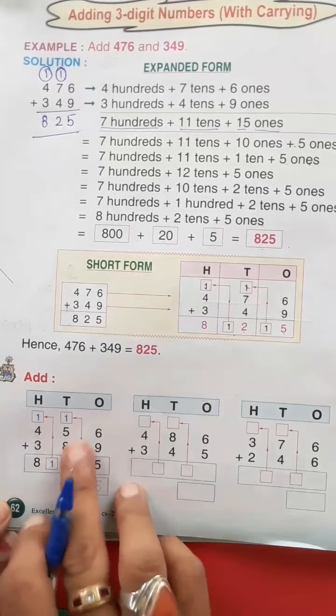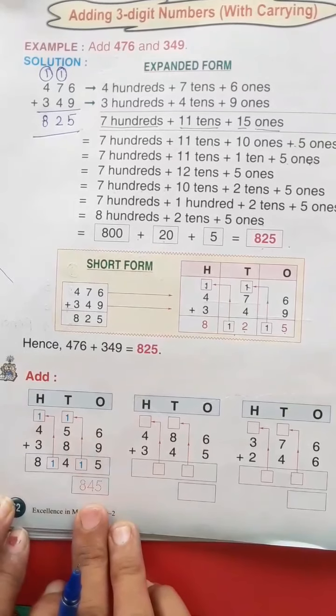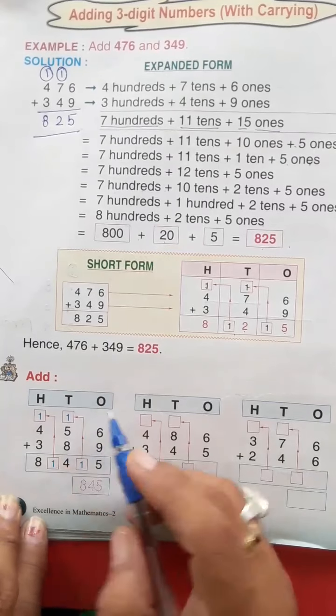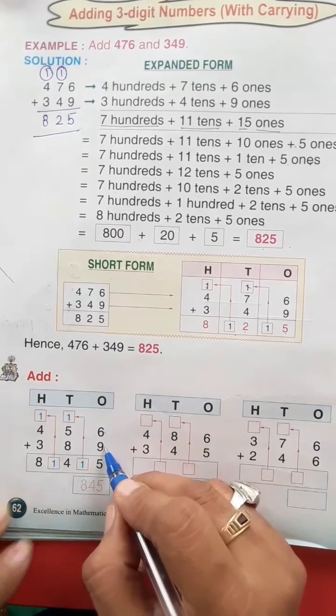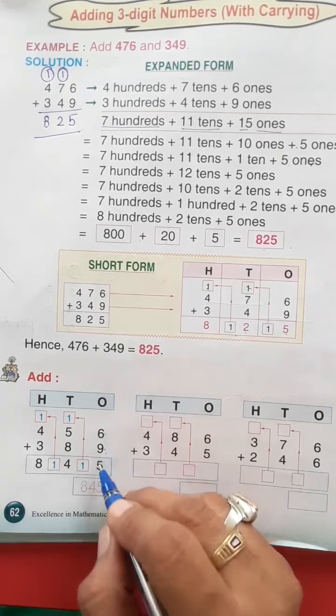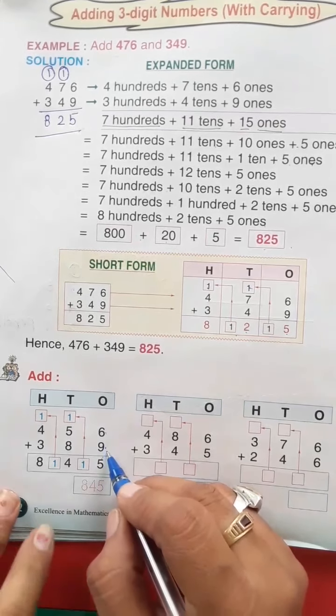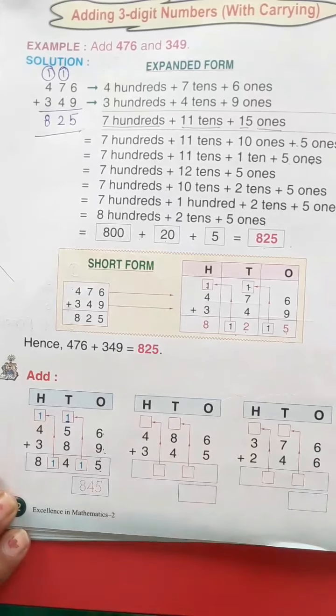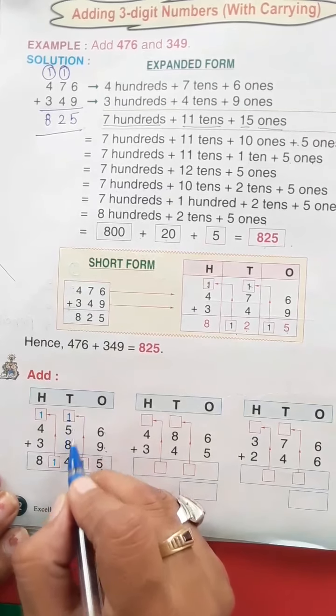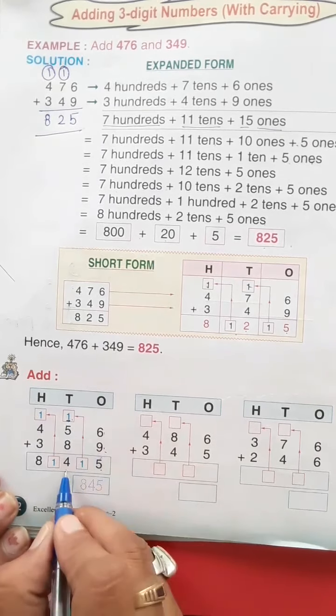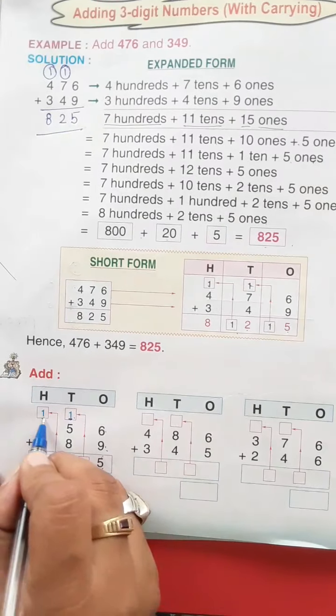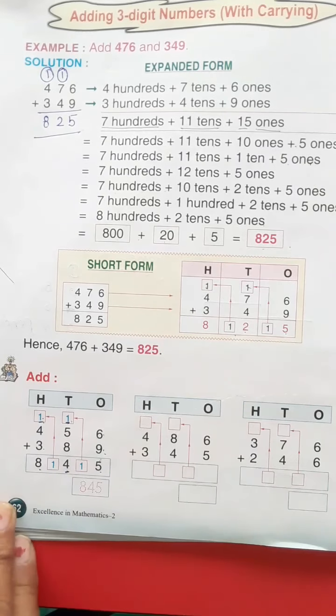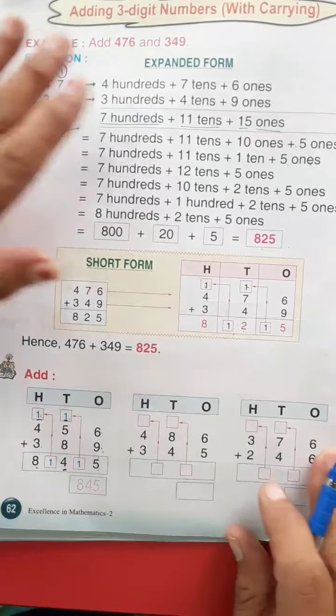Now exercise: add. First one is done for you. We put the hundreds, tens, and ones place. Now six and nine, we add it so it will be 15. So we put the 5 and carry 1. Five and eight is 13, plus 1 is 14. Four and three is seven, plus one is eight. Okay.